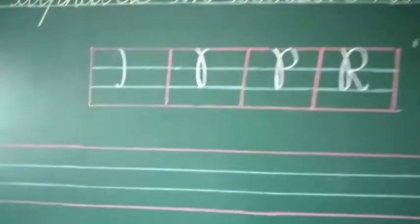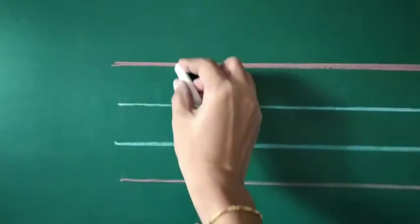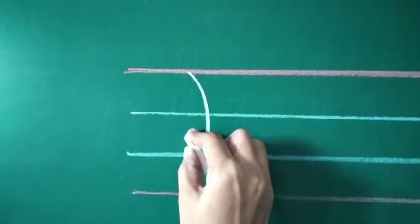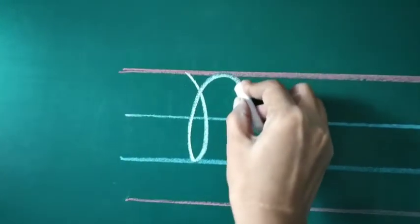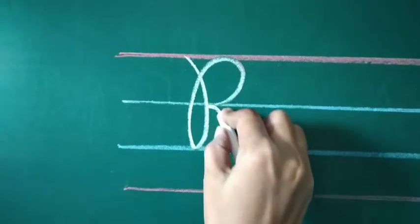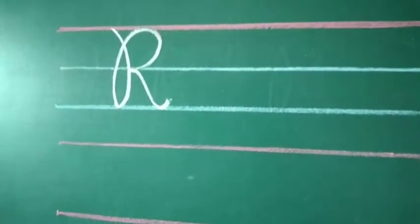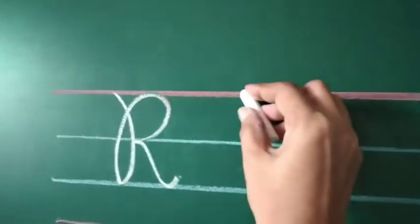Now let's write some more times. So now what do we have to do? Start from here, take a little turn, like this, and like this. This is letter R. R for rabbit. Okay, R for rose. R for red color.